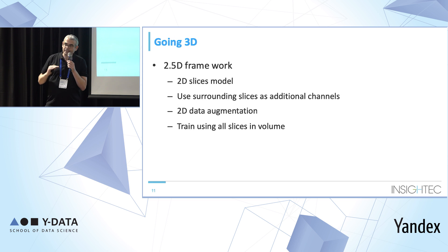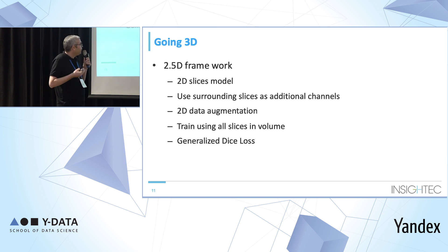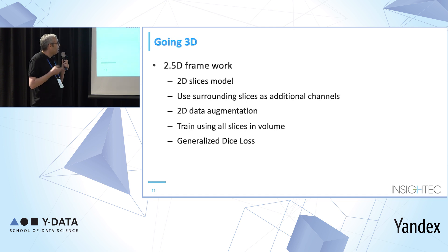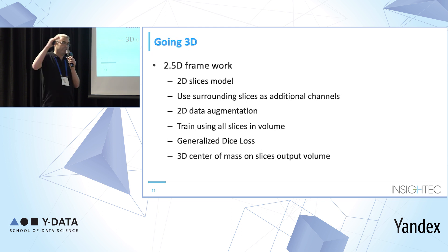I did several 2D data augmentations and trained on all the slices in the volume. Most slices in the volume have an empty label image — not close to the landmark. So I used generalized dice loss as the loss function. This loss function handles two things: it gives high weights for small labels, since my label is very small relative to the full volume, and it deals with slices that don't have a label at all. Finding the landmarks is done by computing the 3D center of mass from all the slices' predictions.